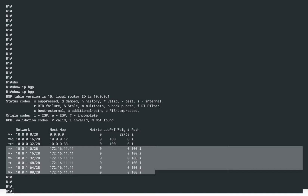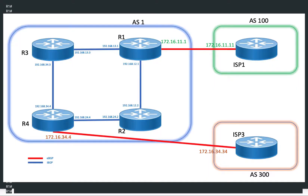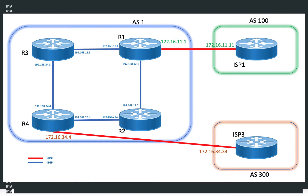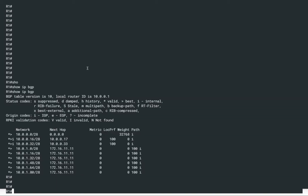Now we are on router R1. R1 has a connection directly to R2 and R3 within AS1, but it does not have a direct connection with R4. R4 has a direct connection with R2 and R3, and also has an EBGP session with AS300. So R1 is receiving these prefixes from AS100.